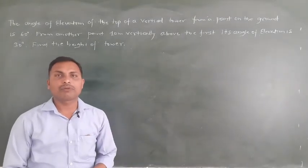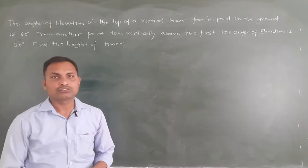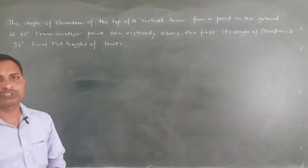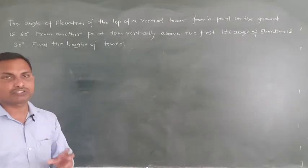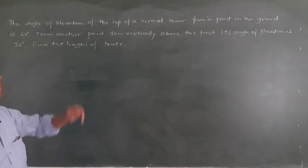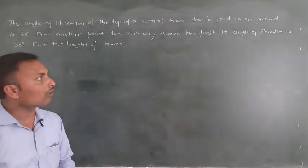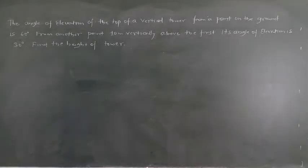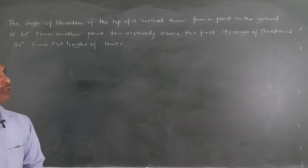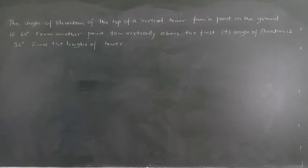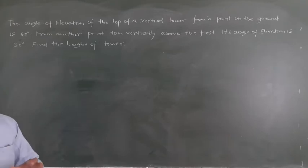Hello students, welcome back to mathematics class. Today I would like to discuss with you some problems related to applications of trigonometry. Here we have the first problem: the angle of elevation of the top of a vertical tower from a point on the ground is 60 degrees. From another point 10 meters vertically above the first, its angle of elevation is 30 degrees. Find the height of the tower.